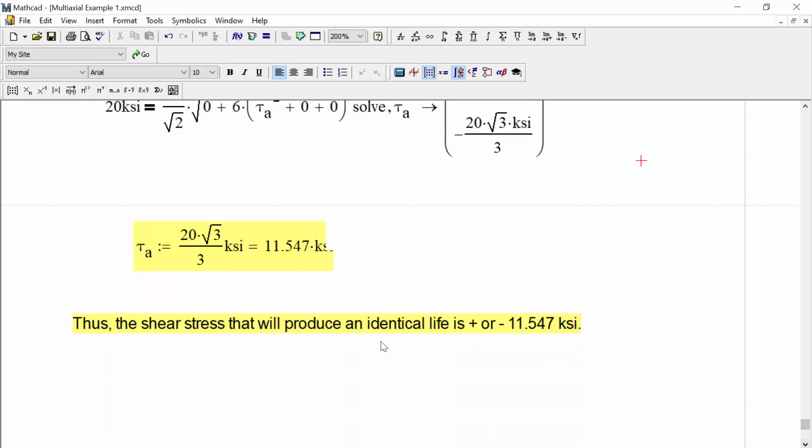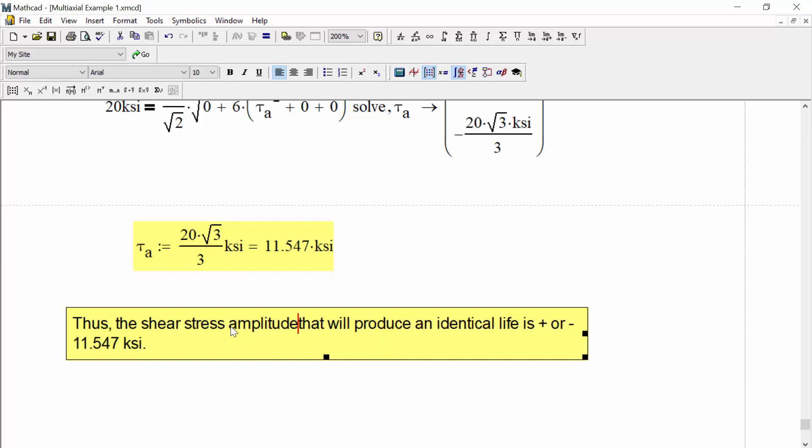And we find that tau a is equal to 11.547 KSI. Thus, the shear stress amplitude that will produce an identical life is equal to plus or minus 11.547 KSI.